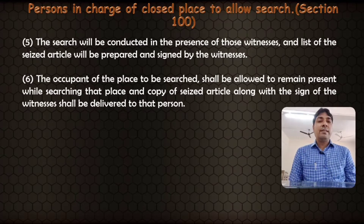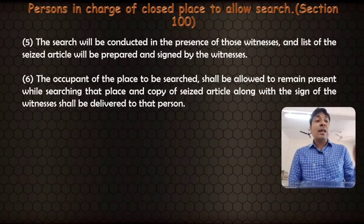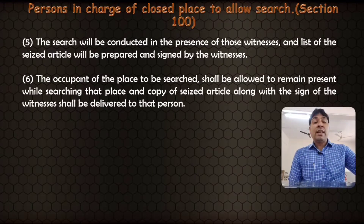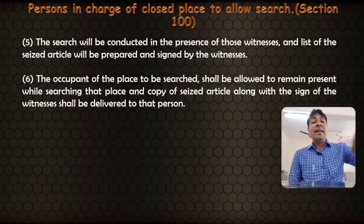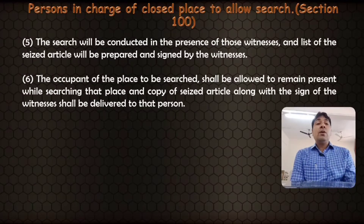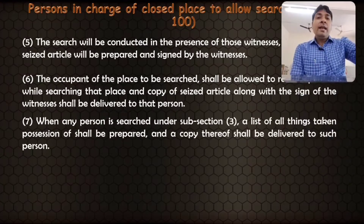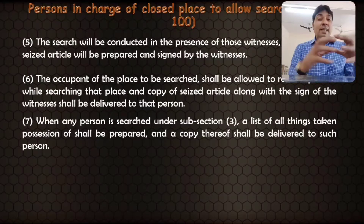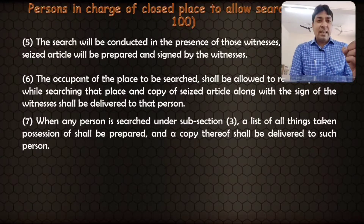The occupant of the place to be searched shall be allowed to remain present while the search is conducted, and a copy of the seized article list along with the signatures of the witnesses shall be delivered to that person. Similarly, when any person is searched under subsection 3, a list of all things taken possession of shall be prepared and a copy delivered to such person.